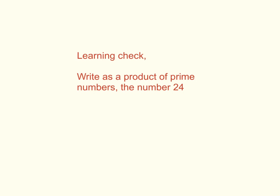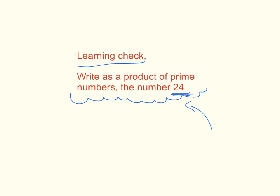For a learning check at home, try this question: write as a product of prime numbers the number 24. Go through your steps, look back through the lesson, and see if you can build a proper factor tree for 24. See everybody tomorrow!